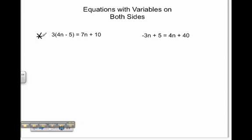The first thing we need to do is combine like terms or perform distributive property. 3 times 4n is 12n. 3 times negative 5 is negative 15. That is equal to 7n plus 10.